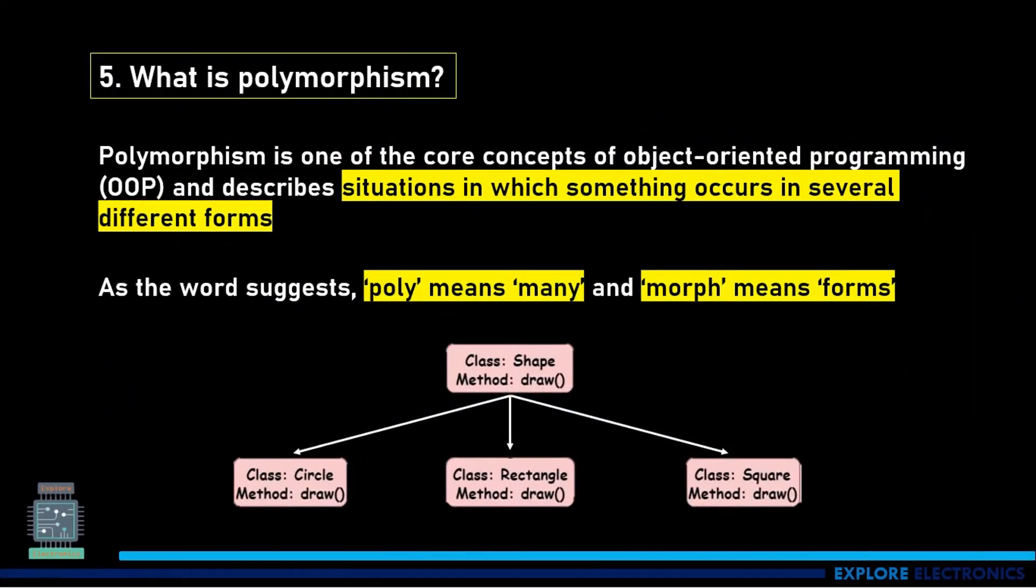What is polymorphism? Polymorphism is one of the core concepts of OOPs and it describes situations in which something occurs in several different forms. As the name itself says, poly means many and morph means forms.